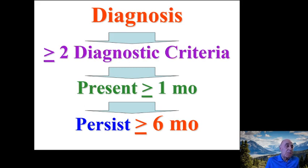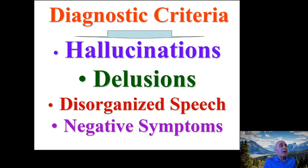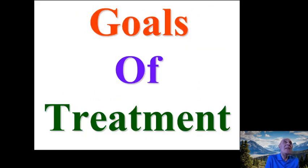The diagnosis of schizophrenia depends on diagnostic criteria. If a patient has at least two diagnostic criteria present for at least one month and persisting for at least six months, the diagnosis is confirmed. The criteria include hallucinations, delusions, disorganized speech, and negative symptoms.